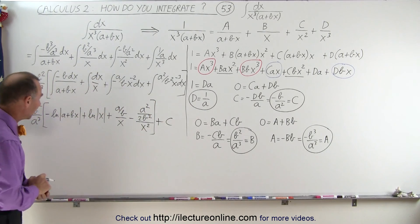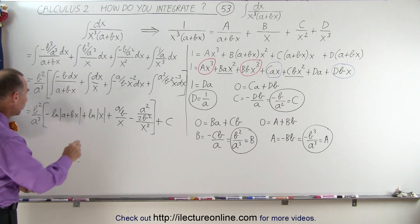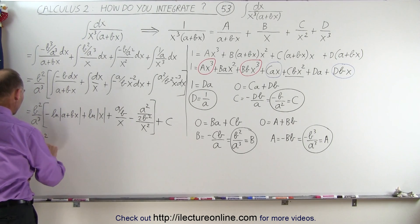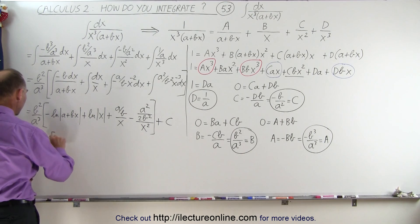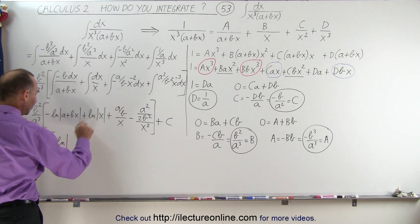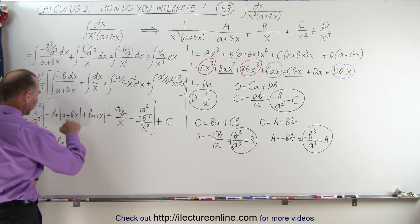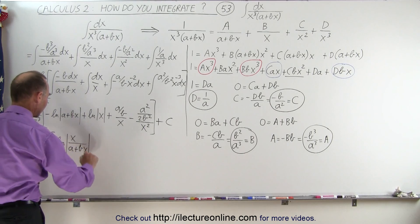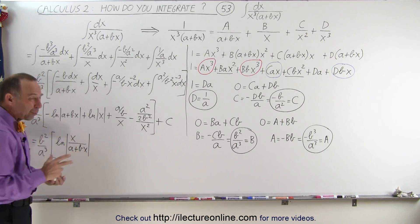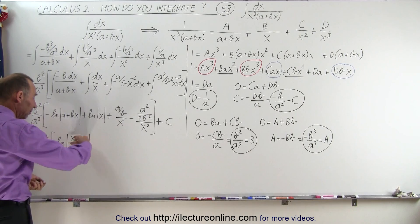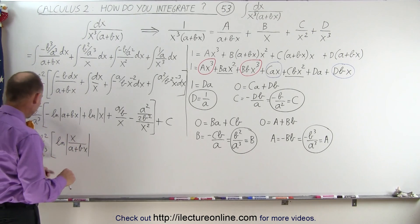Now we need to simplify a little bit more. Notice we can combine the two log terms. This becomes equal to b squared over a cubed times the natural log of x over a plus bx — since the x term is positive it goes in the numerator, and the a plus bx is negative so it goes in the denominator. Typically, they will turn this into a negative so they can flip this over, which is the normal way of writing it.